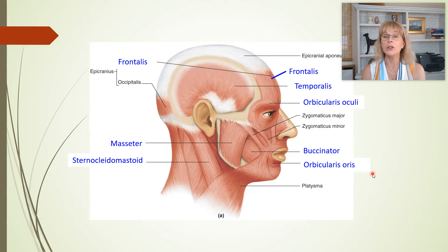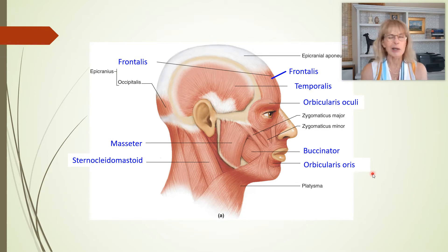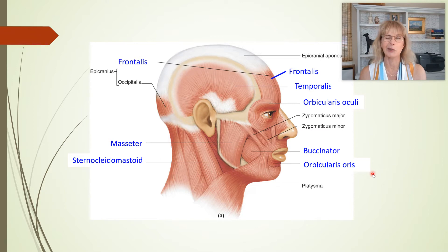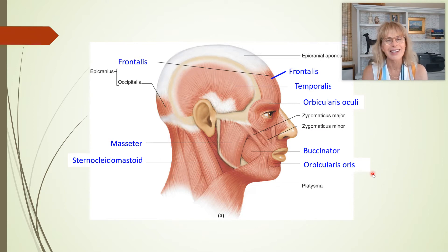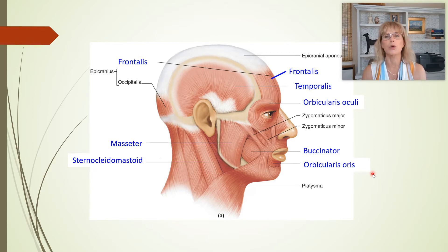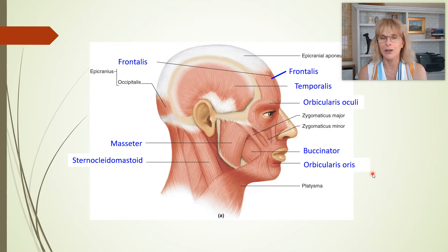When the orbicularis oculi contracts, you squint your eye. The orbicularis oris lets you purse your lips as if you're about to whistle. That's what the orbicularis oris does.